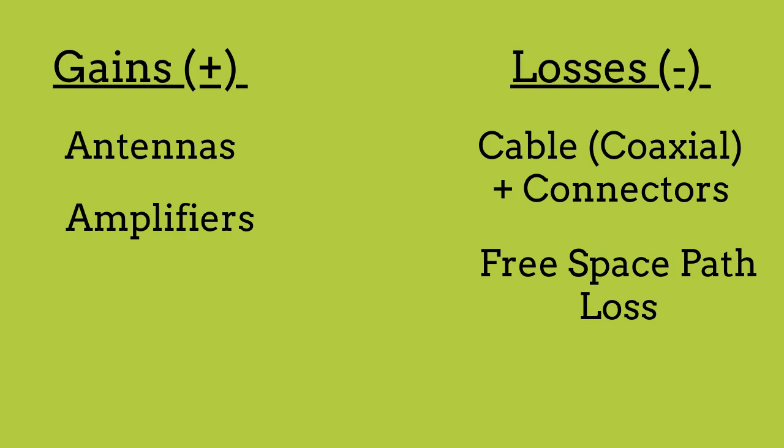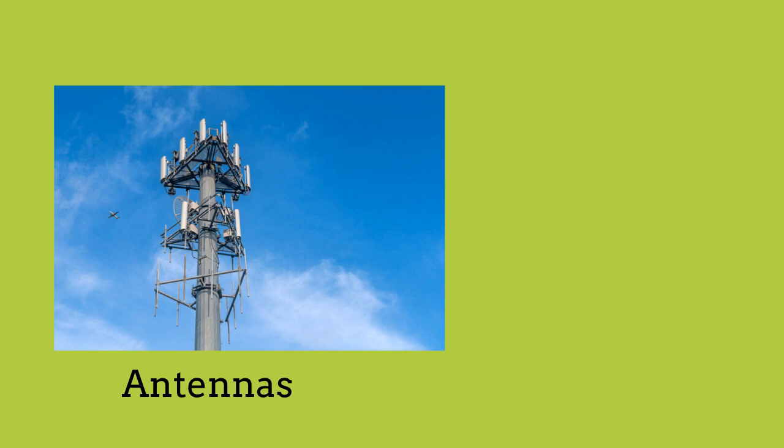Gains or devices that make a signal stronger are devices such as antennas and amplifiers. Losses or equipment that make a signal weaker are things like coaxial cable and connectors and free space path loss, which we'll talk about in greater detail in an upcoming slide.